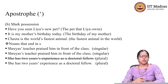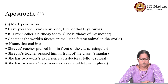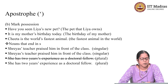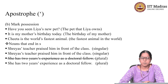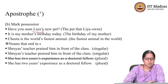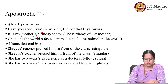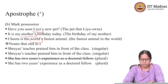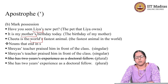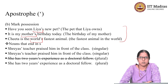Apostrophe is also used to mark possession. Examples: 'Have you seen Leah's new pet?' — meaning the pet that Leah owns. 'It is my mother's birthday today' — the birthday of my mother. 'The cheetah is the world's fastest animal' — the fastest animal in the world. This possession or ownership is marked using an apostrophe. Whenever there is possession, you mark it with an apostrophe.